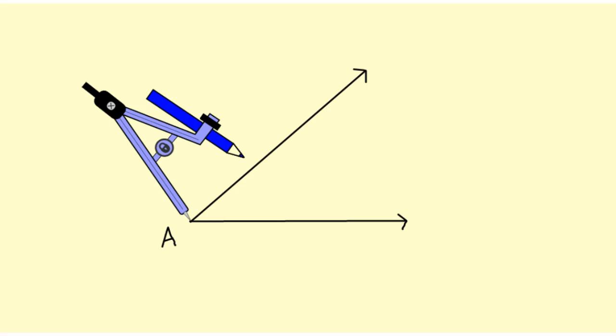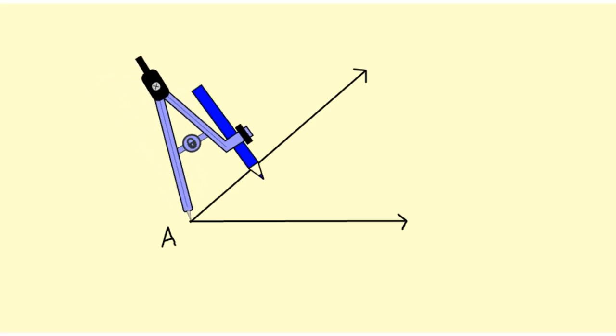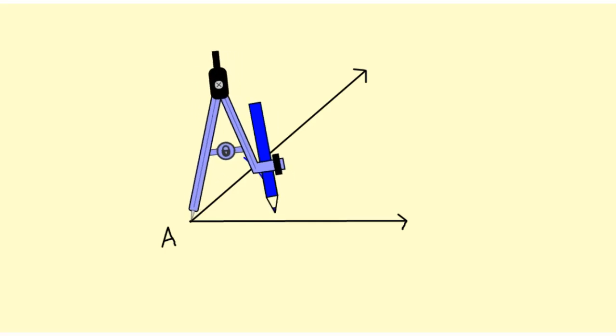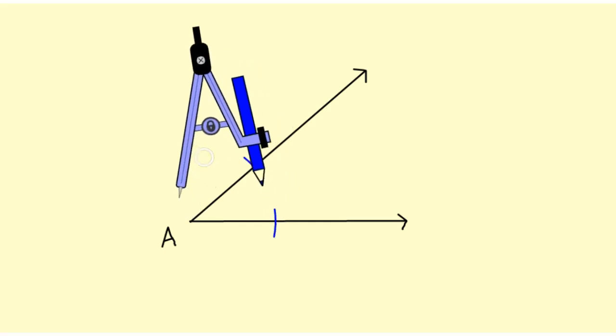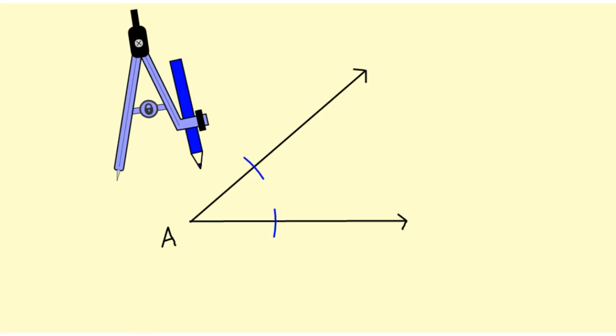And I'm going to mark off a little arc on the first ray and then also down on the second ray. So those two arcs are the same distance from the vertex A.